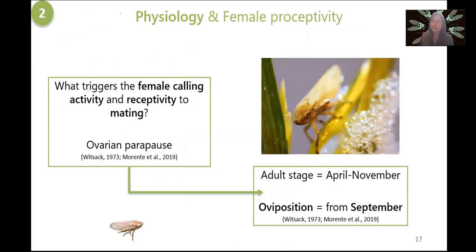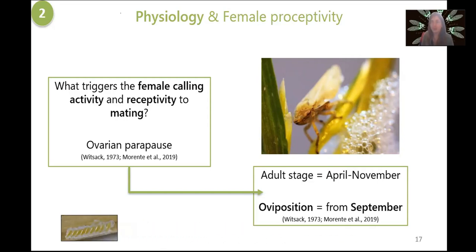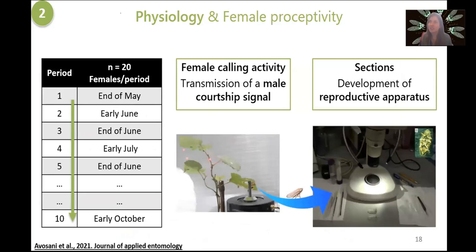This raised a question: what triggers female calling activity and receptivity to mating? We know that in Philaenus spumarius an ovarian diapause occurs — even if the adult stage spans from April to November, oviposition starts from September. So there could be a correlation between female behaviour and egg development. To answer this, I performed an experiment running from May to October, testing 20 females per period. The test consisted of placing a female on a plant and waiting for spontaneous emission of a calling signal, then stimulating females with a male courtship playback to see if they replied. After each trial, females were dissected to observe ovary development.